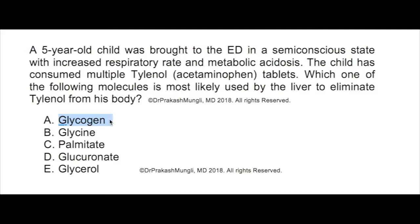Glycogen is also stored in skeletal muscle as reserve energy. So glycogen is not the answer. Option B: glycine. Glycine is a hydrophobic amino acid, so even if you add glycine, you're not going to make the molecule more easily eliminated from the body — not the answer. Option C: palmitate. Palmitate is a relatively hydrophobic fatty acid. You cannot add a fatty acid to a molecule to eliminate it from the body.